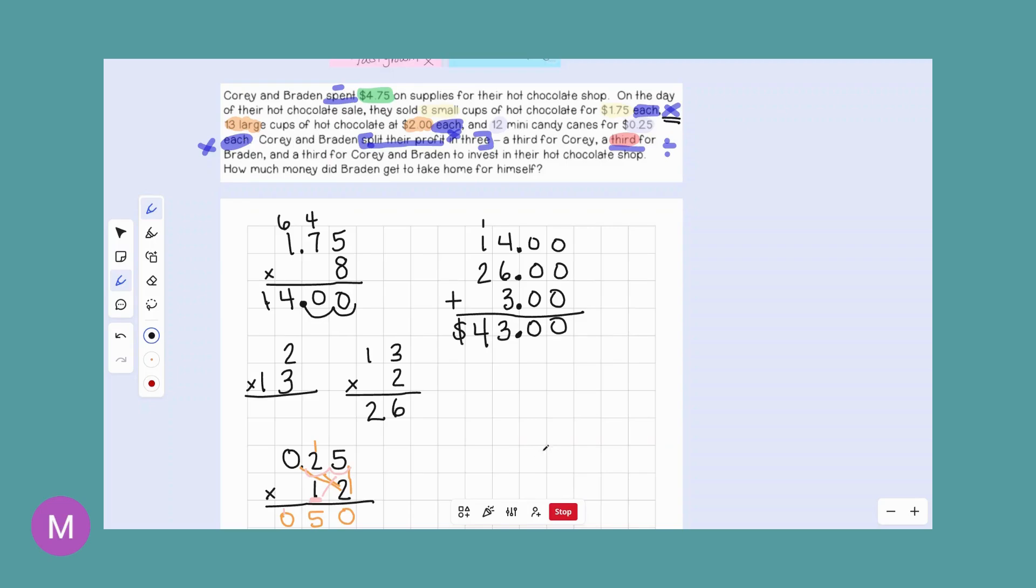Now we've got to find out how much their profit was. So we need to take away how much they spent on supplies. So that's subtraction and our supplies cost us $4.75. So we're going to line up again, we're in subtraction. So we're going to line up the decimals, $4.75. And we are subtracting to find out their profit. So we're going to borrow, 10 minus five is five. Nine minus seven is two. Here's our decimal. Two minus four, we got to borrow again. So now 12 minus four, three minus zero.